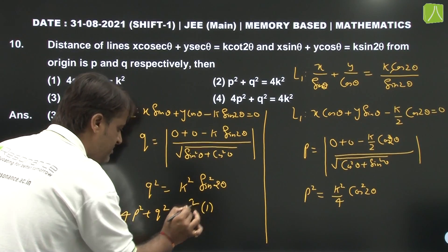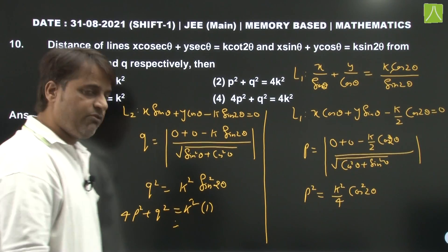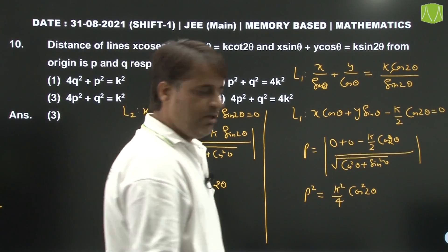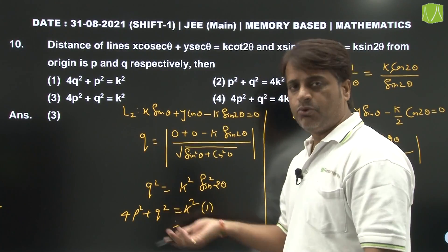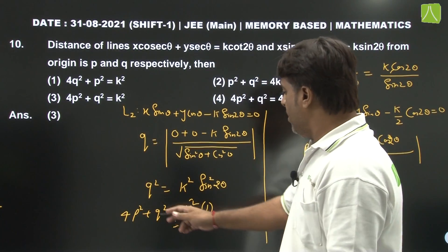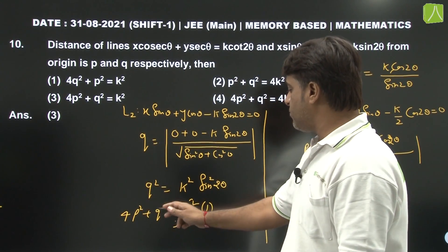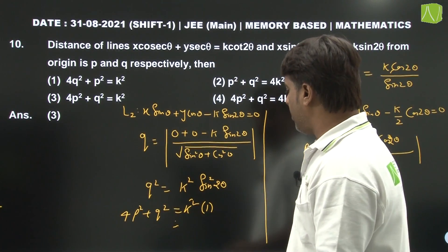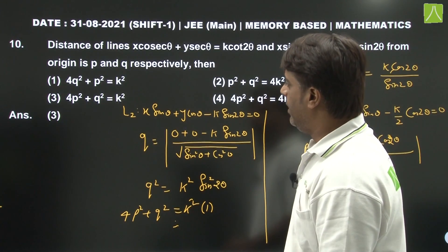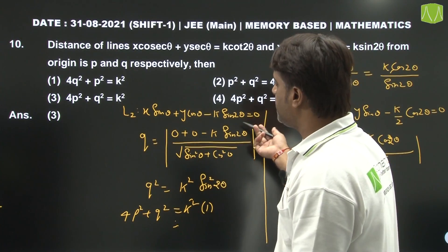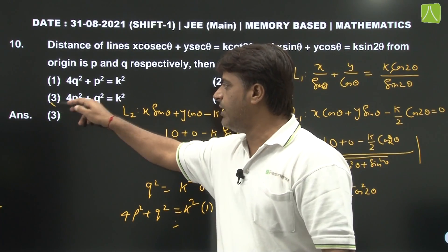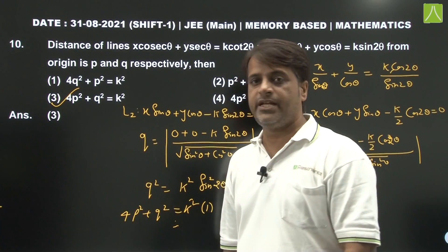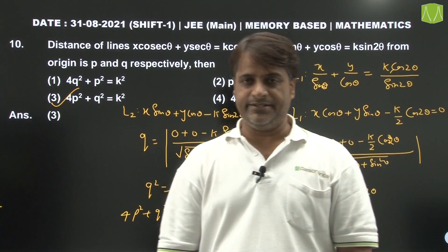Cross multiplying the first result by 4: 4P squared plus Q squared equals K squared times (cos squared 2theta plus sin squared 2theta) equals K squared times 1. Therefore 4P squared plus Q squared equals K squared. The third option is the correct answer.